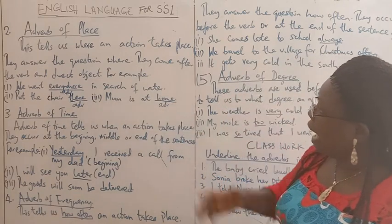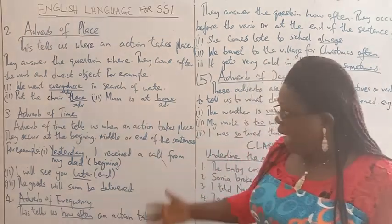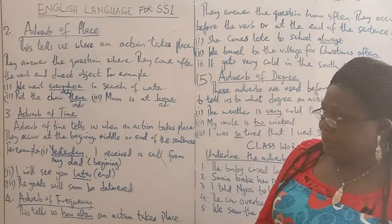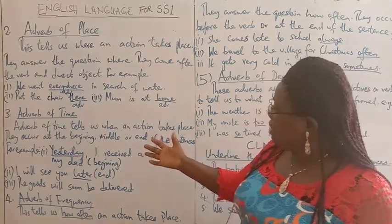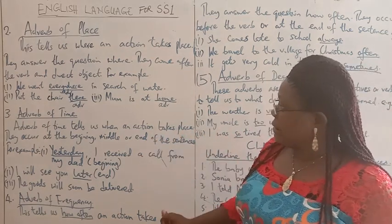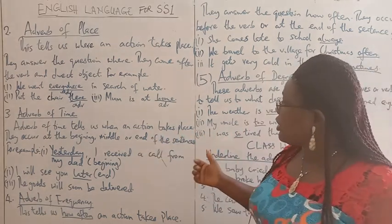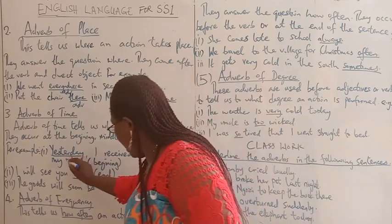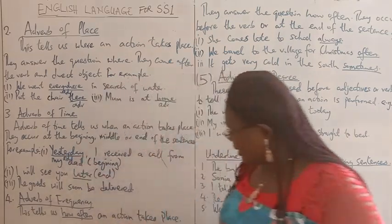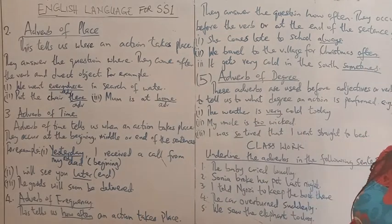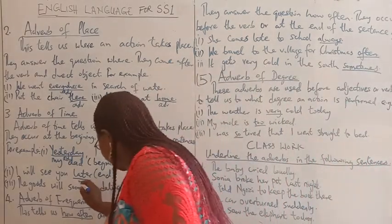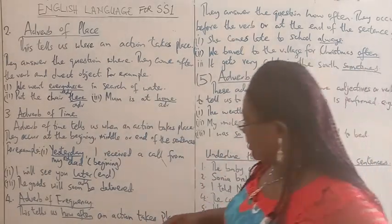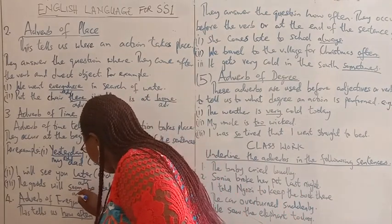Number three: adverb of time. Adverb of time tells us when an action takes place. They occur at the beginning, middle, or at the end of sentences. For example: 'Yesterday, I received a call from my dad' — adverb of time. 'I will see you later' — 'later', adverb of time. 'The goods will soon be delivered' — 'soon', adverb of time.